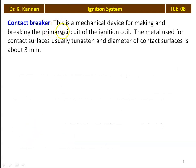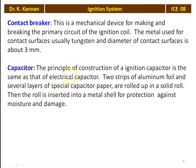The contact breaker is a mechanical device for making and breaking the primary circuit of the ignition coil. The metal used for the contact surface is usually tungsten, and the diameter of the contact surface is about 3 millimeters. Whenever you want a spark at the spark plug, you open the contact breaker, which is done by an automatic cam mechanism. The capacitor: the principle of construction of the ignition capacitor is the same as an electrical capacitor. It stores the excess current and supplies the current back to the primary winding. Two strips of aluminum foil and several layers of special capacitor paper are rolled into a solid roll, which is then inserted into a metal shell for protection against moisture and damage.